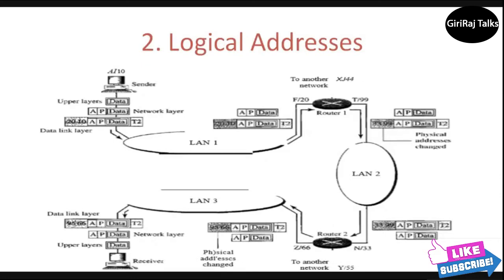The second type is logical addresses. Logical addresses are necessary for universal communications that are independent of the underlying physical networks. Physical addresses are not adequate in an internetwork environment where different networks can have different address formats. A universal addressing system is needed in which each host can be identified uniquely, regardless of the underlying physical network. The logical addresses are designed for this purpose. A logical address in the internet is currently a 32-bit address that can uniquely define a host connected to the internet. No two publicly addressed and visible hosts on the internet can have the same IP address.